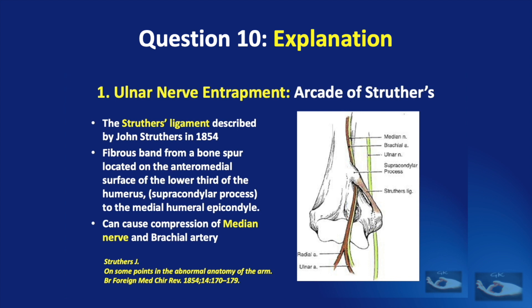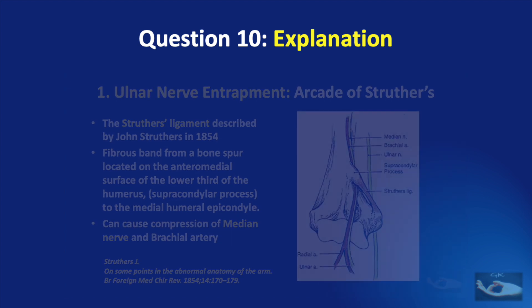This consists of a fibrous band from a bone spur located on the anteromedial surface of the lower third of the humerus, otherwise known as the supracondylar process, to the medial humeral epicondyle. This can cause compression of the median nerve and the brachial artery.